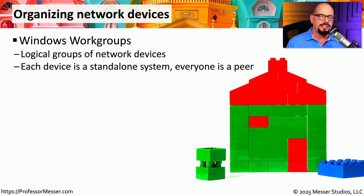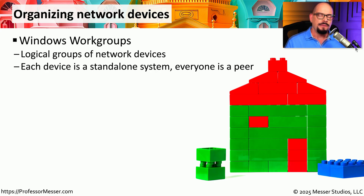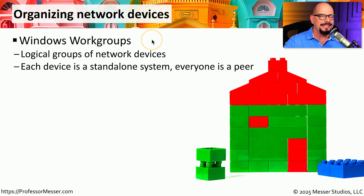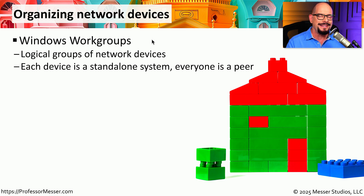With all of these different devices sharing folders, files, and printers across the network, we need to think about how to secure and organize all of these devices. If you're on a network at home, you can collect all of your devices together into one logical group known as a Windows workgroup. Every device is a standalone system, but you can connect them all together to have a single name or a single logical description.